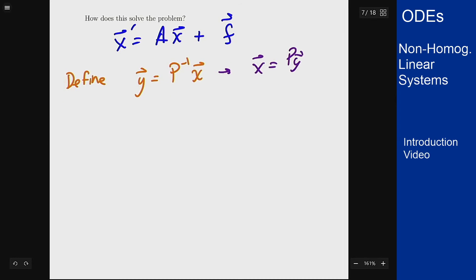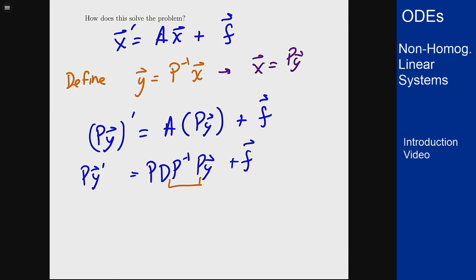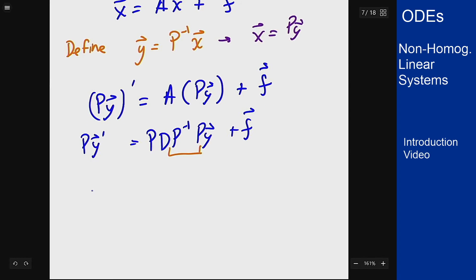So if I do that I get that Py' = APy + f. Now A we know we can rewrite as P times D times P⁻¹, and since P is constant, Py' is just P times y'. These two here become the identity, and if I multiply both sides by P⁻¹ on the left...